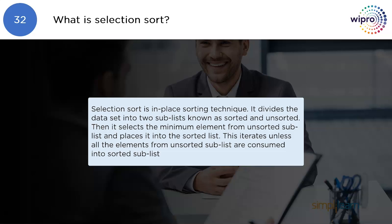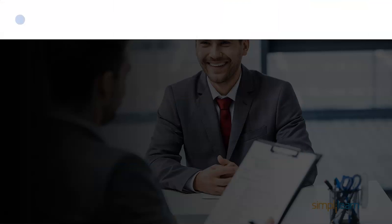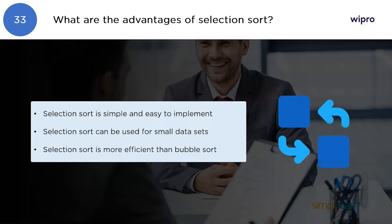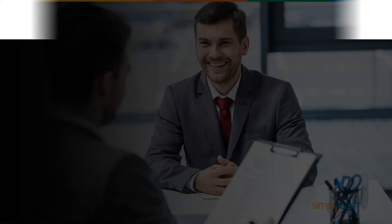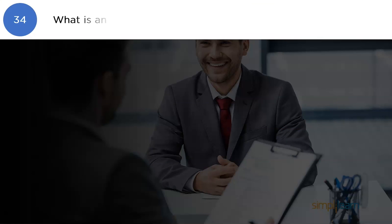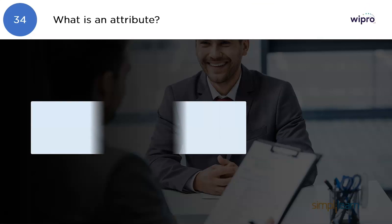What are the advantages of selection sort? Selection sort is simple and easy to implement. It can be used for small data sets and is more efficient than bubble sort.